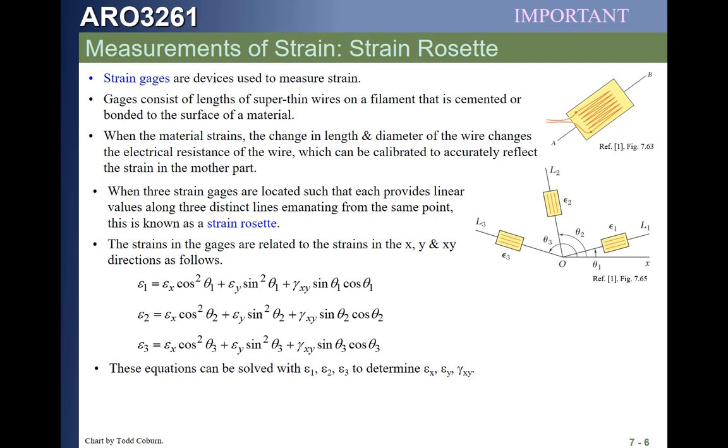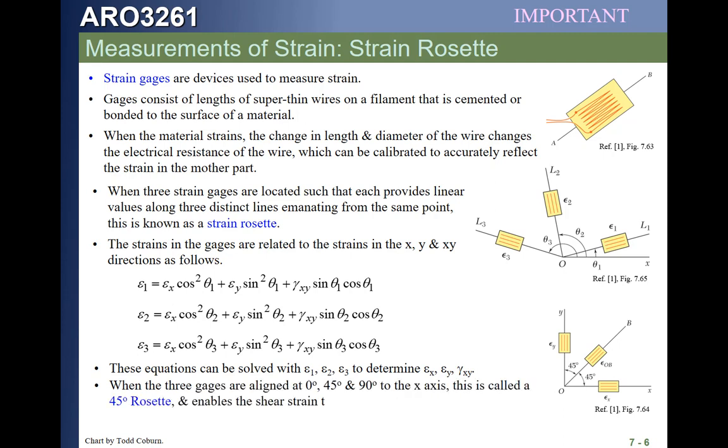And if we ever end up in a place in industry where we are evaluating strains from testing, these are the equations we can use to relate those. Now if we happen to have our three gauges rotated, placed in what's called a 45-degree rosette, that means we have a strain gauge in one direction, a strain gauge 90 degrees to that, and a strain gauge 45 degrees to that, then our equations get a little simpler. Actually, what happens is the shear strain is given by this relation that we saw before: 2 times the strain on the bisector minus the other two strains gives us the shear strain, and actually everything gets a little easier.